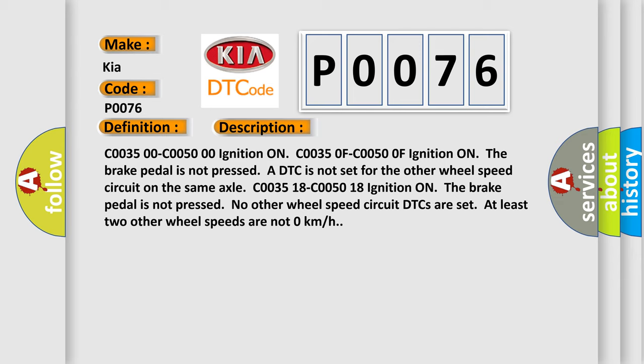C0035 18-C0050 18 ignition ON. The brake pedal is not pressed. No other wheel speed circuit DTCs are set. At least two other wheel speeds are not zero kilometers per hour.